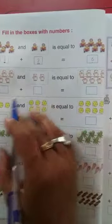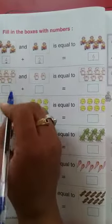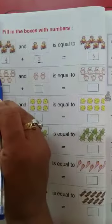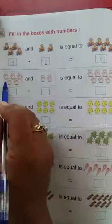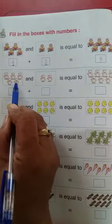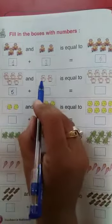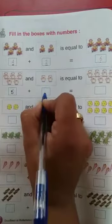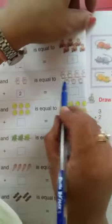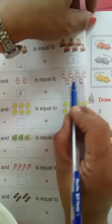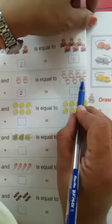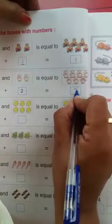Ab hum next wale ko solve karenge. So yahan par kuch teddy bears ke pictures de rakhe hain 2 boxes mein. First box ko hum count karte hain. 1, 2, 3, 4 and 5. Kitne de rakhe hain yahan par? 5. Another box mein 1 and 2. To kitne ho gaye 2. Ab yahan wale box mein hum altogether inko plus karenge. To total kitne ho gaye? 1, 2, 3, 4, 5, 6, 7. To kitne teddy bears ho gaye humare? 7.